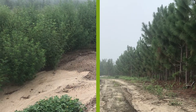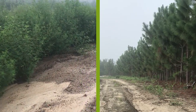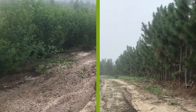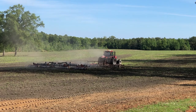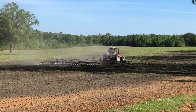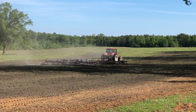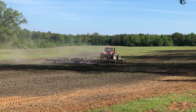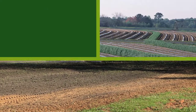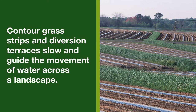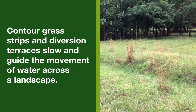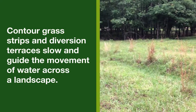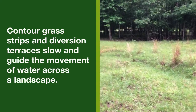Buffers also include woody wind barriers and vegetative barriers that can protect growing areas from windborne contamination and runoff, and protect crops from wind and frost damage. Other examples of buffers are contour grass strips and divergent terraces, which slow and guide the movement of water across a landscape.